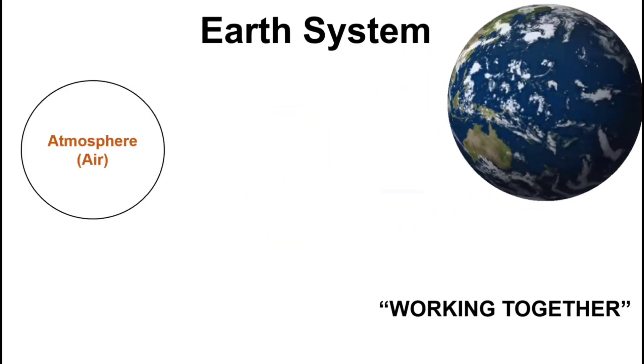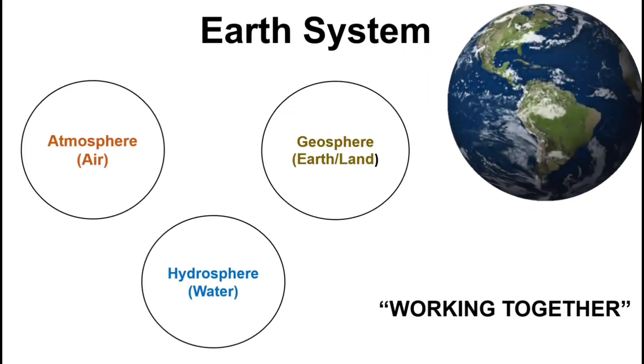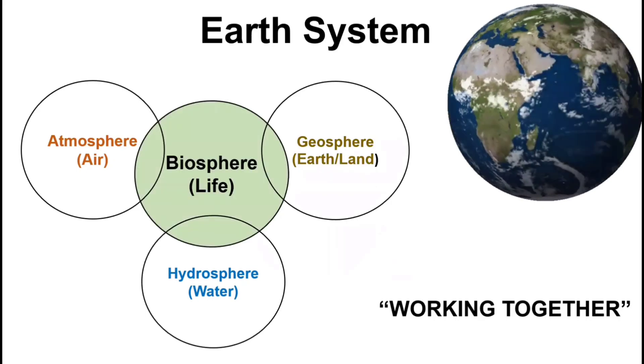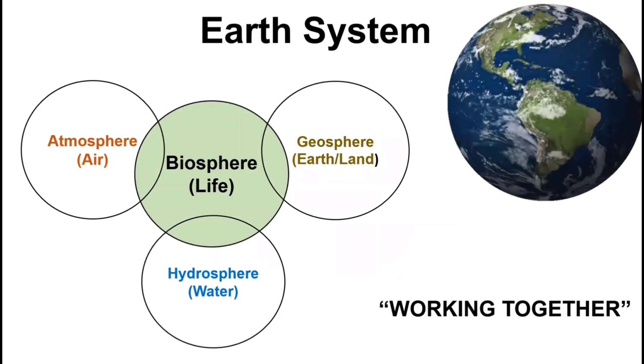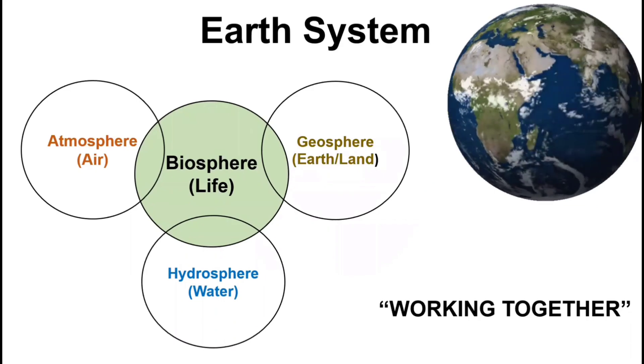Atmosphere, hydrosphere, geosphere, and the biosphere. These four spheres regulate the different functions of Earth, which makes it habitable.